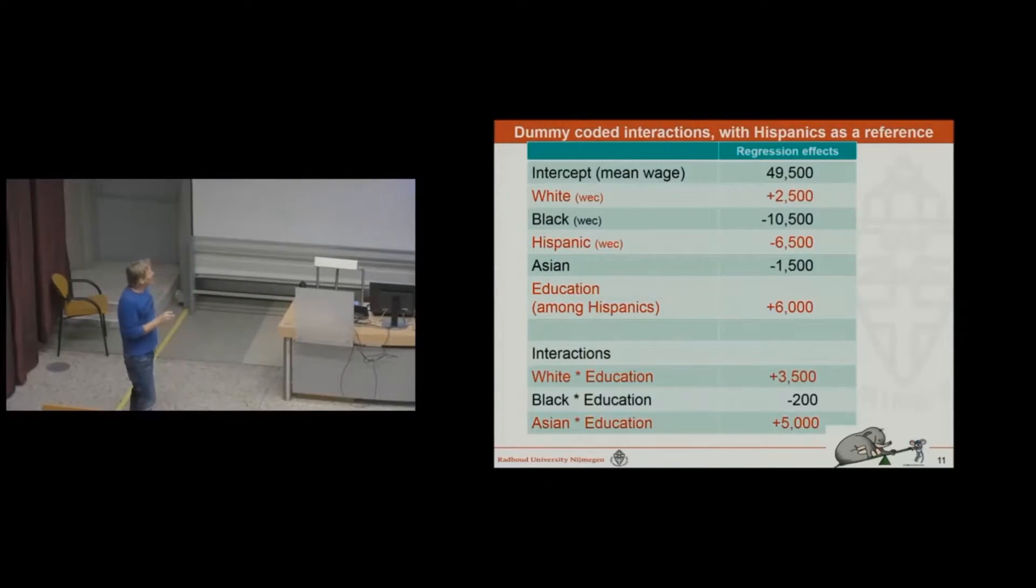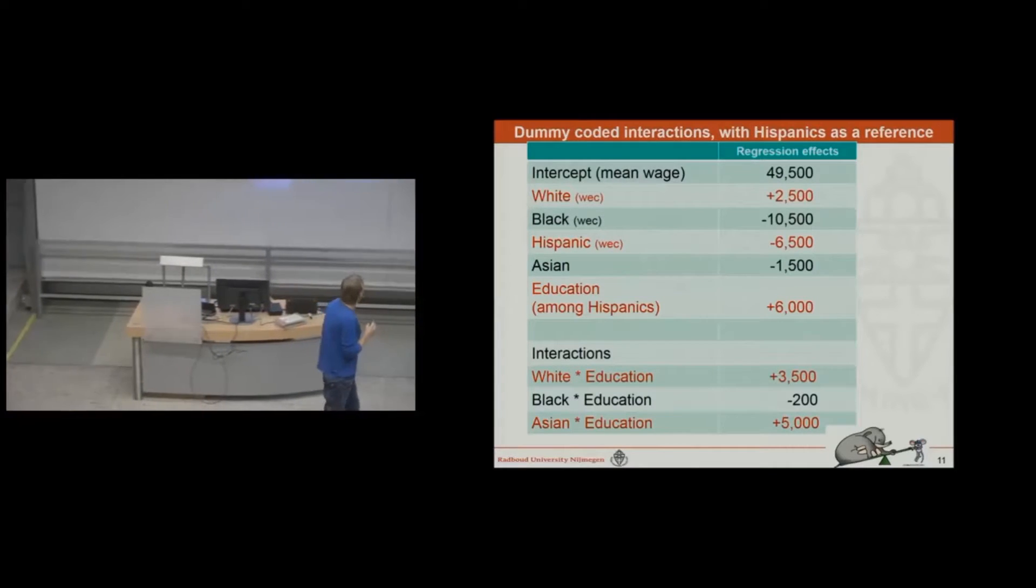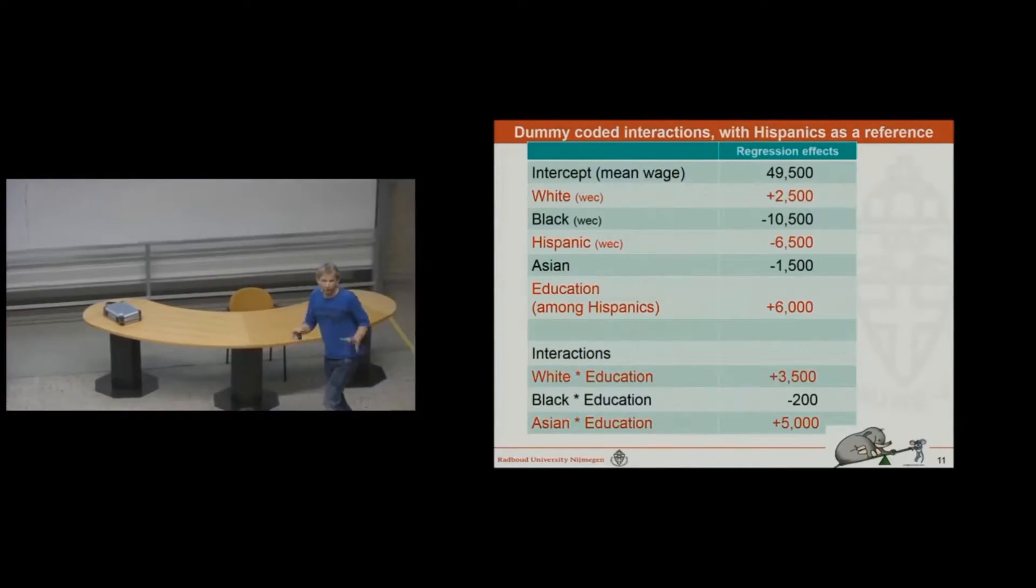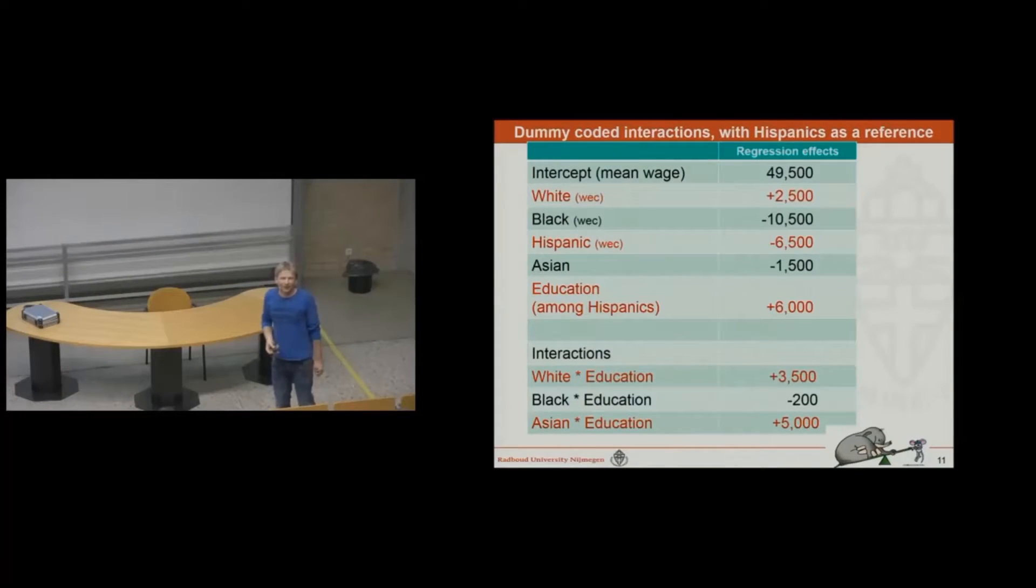That's the first thing I have to explain. The other thing I have to explain is what are these numbers over here? What do they mean? And in fact, they mean that the effect among the white population of education is six grand plus three and a half grand, which makes nine and a half grand. And this is the effect, if you take six grand minus 200, you get the effect among the black population. And if you add these two numbers, you get 11. That's the effect among the Asians. The whole question again is why did you pick Hispanics as a reference category? You could have chosen the whites. You could have chosen blacks. Why did you do that? And that question again is very difficult to answer.